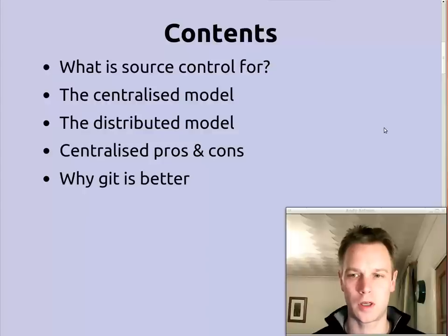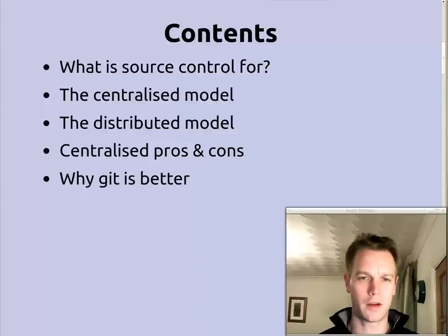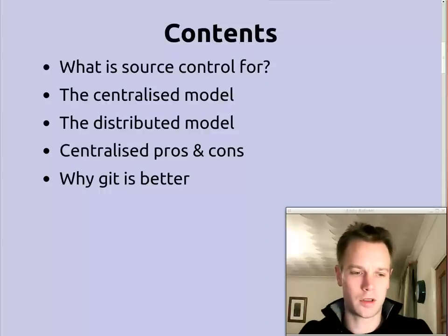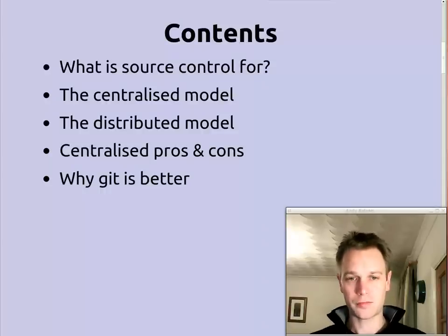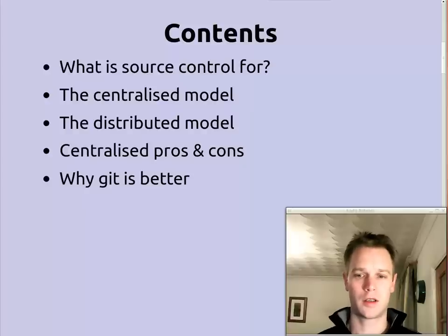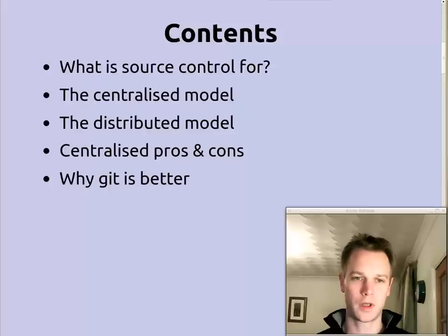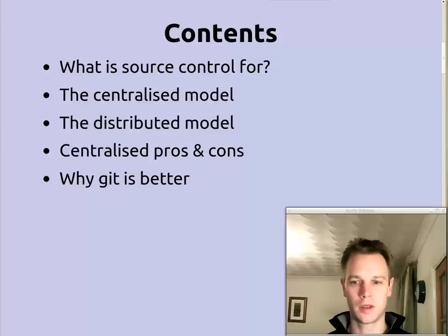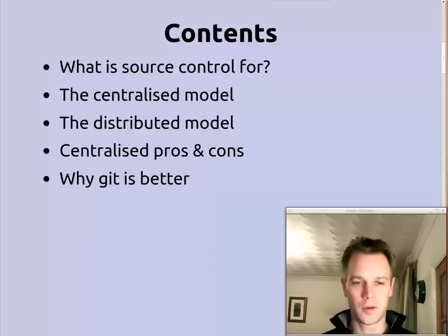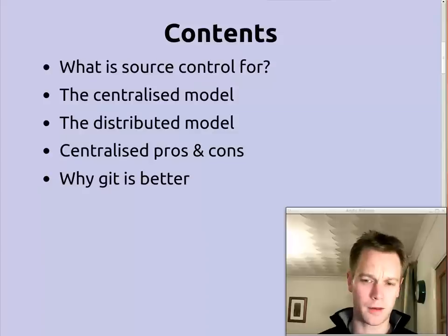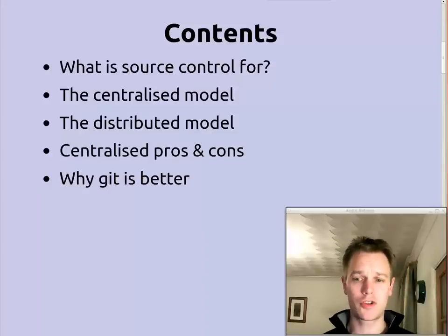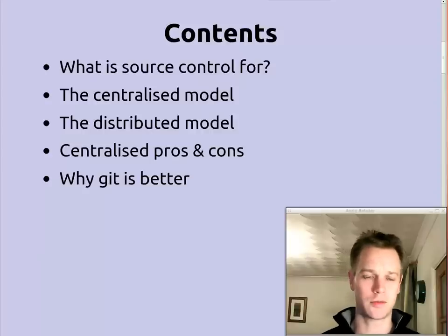So what I'm going to look at is very briefly have a look at what source control is for, in my opinion, which will help us think about what a good tool for source control gives you. I'm going to look at the old way of doing source code control, which I'm calling the centralized model. Then I'm going to look at the new way, which is the way that Git and some other things do it, called the distributed model. Look at some pros and cons for a centralized approach, and talk about why Git's better. By the way, most of what I'm going to talk about is true of the other distributed source control systems, not just Git.